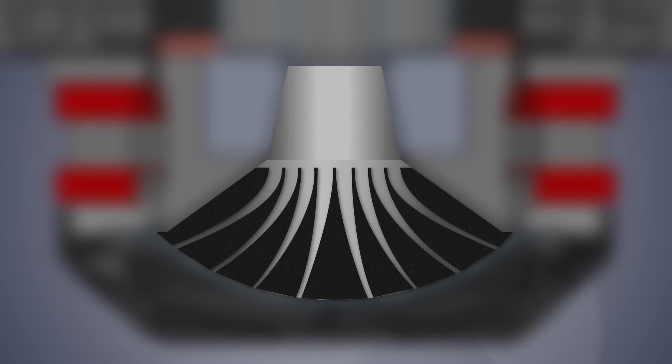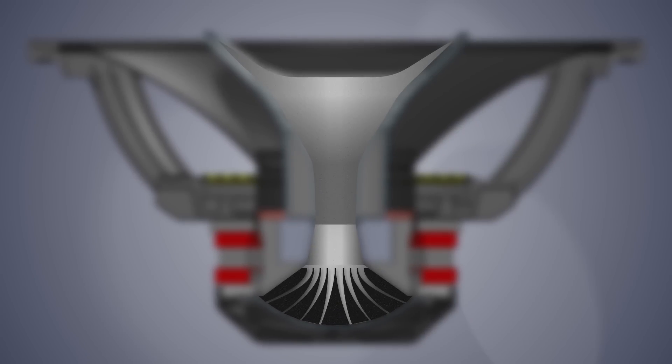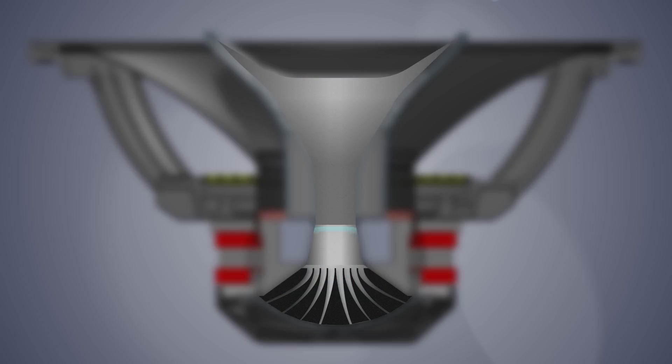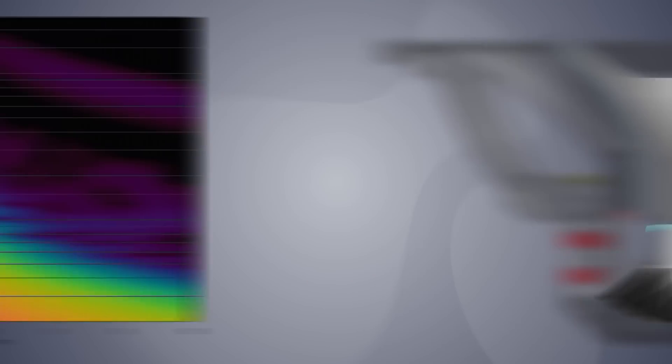Now we've got the output from the compression driver into the throat of the horn. The next component is the horn itself. There are competing requirements to make a good horn: you'd like it to sound good on axis, be well-behaved directionally, and in our case, behave itself in a coaxial configuration. Those three things are often at odds, because to make a directional horn you need abrupt transitions in its shape, and those transitions create reflections returned to the compression driver — partially absorbed, partially re-emitted — resulting, once again, in a smeared transient response.